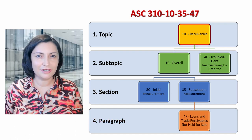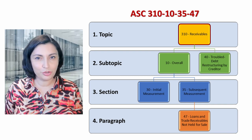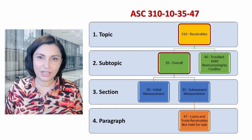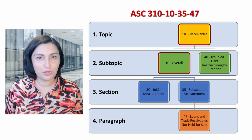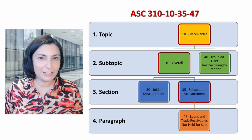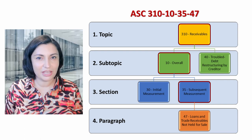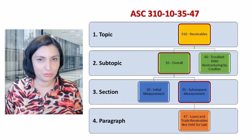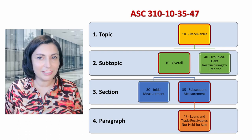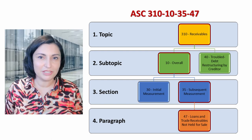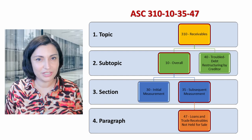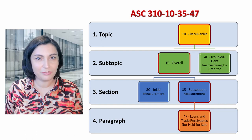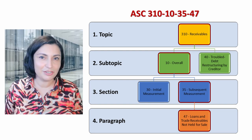To access the necessary paragraphs, go to ASC Topic 310 to access the receivables topic. Then, go to ASC 310-10 to access the overall subtopic of Topic 310. Then, go to ASC 310-10-35 to access the subsequent measurement section of Subtopic 310-10. The final step is to go to FASB ASC 310-10-35-47 to access the loans and trade receivables not held for sale paragraph of Section 310-10-35.